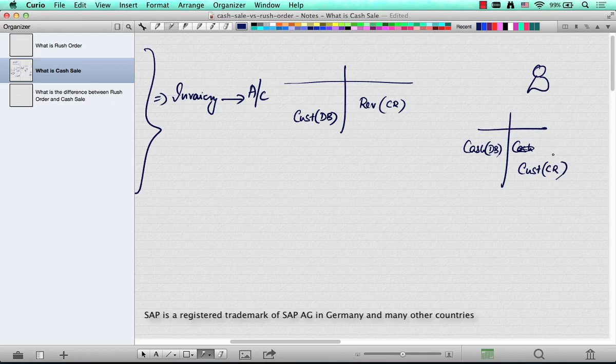So net effect is the customer receivables gets cancelled and you have a revenue account and you have a cash account. So that's a typical two-step cycle that's followed in any B2B process where the cash or check is given at a later point. But in this case, this is not how it happens.